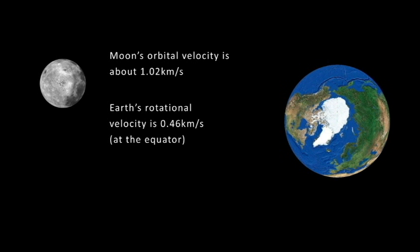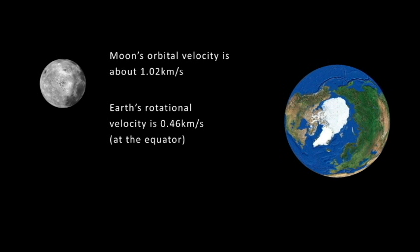Here are some statistics: the Moon's orbital velocity is about 1.02 kilometers per second. The Earth's rotational velocity is about 0.46 kilometers per second — and that's at the equator, which is its fastest velocity. If you need it in imperial units, just use an online converter.